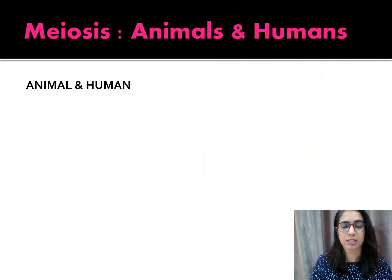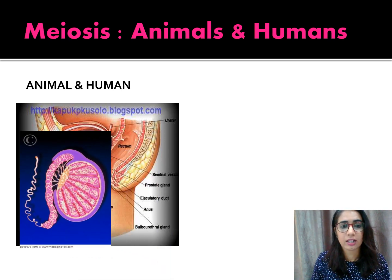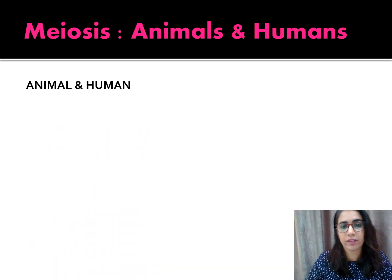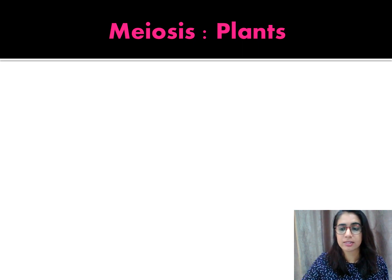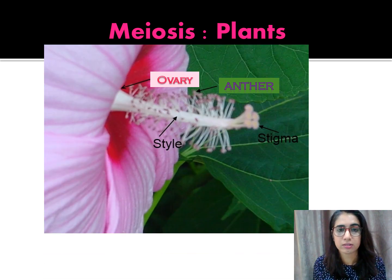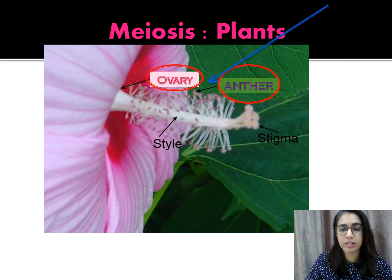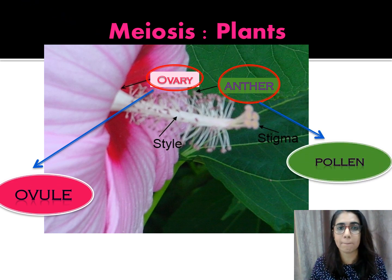Where does meiosis occur? In animals and humans, it occurs in the reproductive organs — in the testes to produce sperm, and in the ovary to produce eggs. In plants, meiosis takes place in the ovary and in the male and female parts of the plant. In the ovary it produces the ovule, and in the anther it produces the pollen.